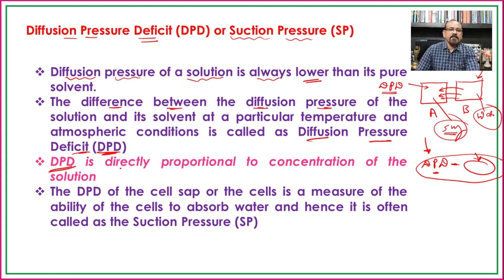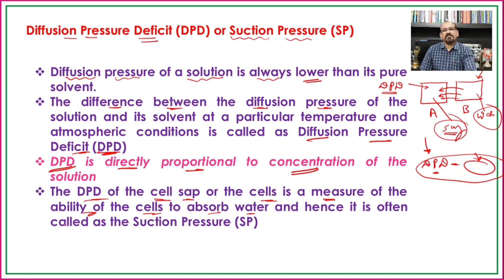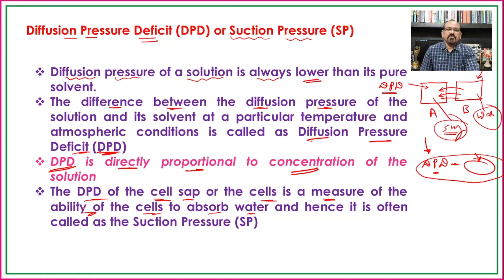The diffusion pressure deficit is directly proportional to the concentration of the solution, just as osmotic pressure is also directly proportional to the concentration of the solution. But only the osmotic pressure is not responsible for the absorption of water by the cell — the DPD is responsible for the absorption of water. The DPD of the cell sap is a measure of the ability of the cell to absorb water, and hence it is known as the suction pressure.